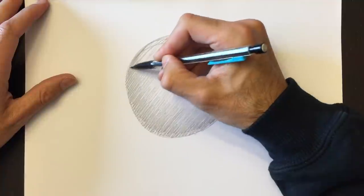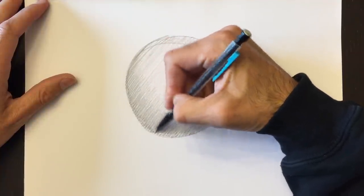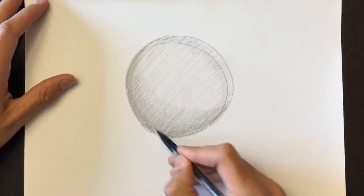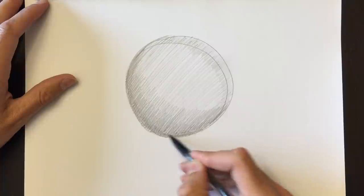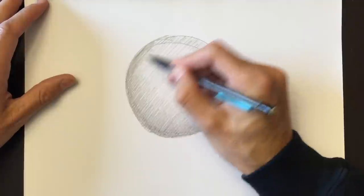So the bottom part is very dark and as I'm moving up with my pencil, I'm going to make sure the shade is getting lighter and lighter. Not the light itself, but the pencil. The graphite.